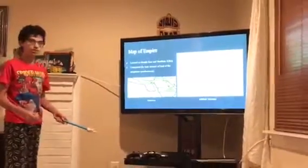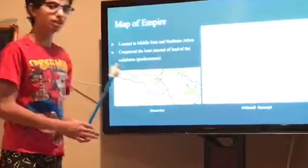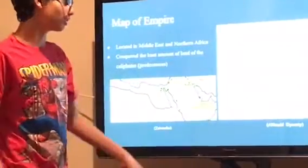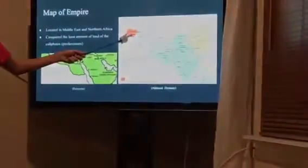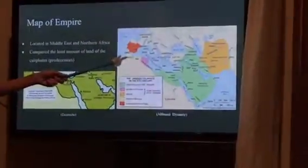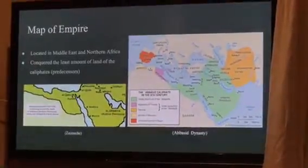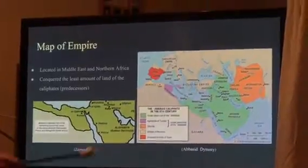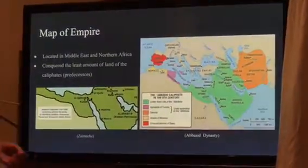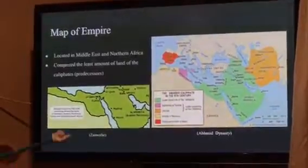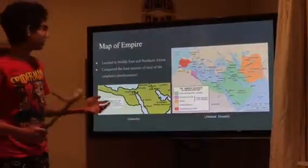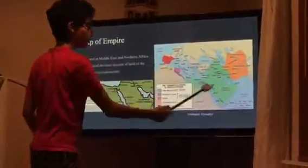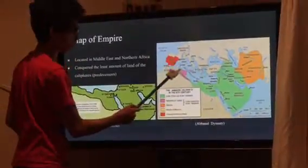Regarding the map and geography of the Empire: the Abbasid Dynasty didn't focus on conquering lands like the Umayyad Dynasty. Instead of continuing into Europe and down into northern Africa, they focused east, and they lost Spain and Morocco — shown here in red and peach-yellow — all the way to the west. They conquered the least amount of land compared to their predecessors, but they focused on something that helped the Islamic Empire overall. It's located in the Middle East and northern Africa, up to this purple region here.